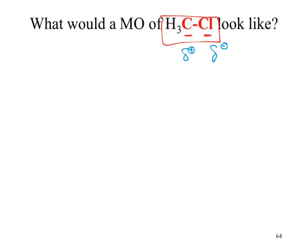That allows us to predict something about reactivity — how the electrons are dispersed in that structure. In this context, we're not concerned about the length of the bond. If we're going to look at a molecular orbital diagram, we need to look at the atomic picture for our carbon and our atomic picture for our chlorine — what orbitals would be involved in making that bond from atomic chlorine and atomic carbon.